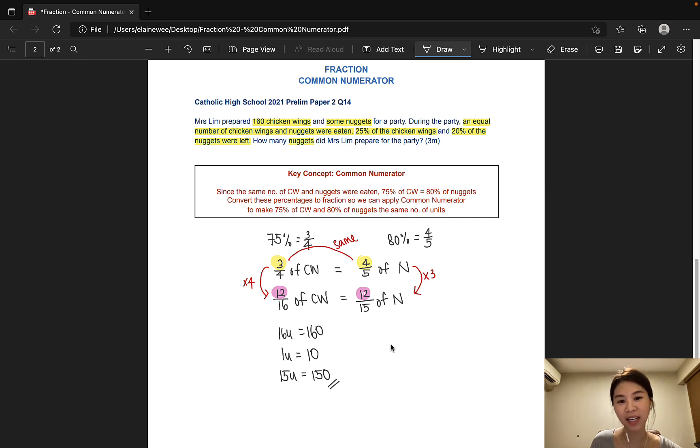So, as you can see, this method is so much faster compared to drawing a model, splitting every unit up into equal parts and then counting them one by one to find out what are the total units of chicken wings and total units of nuggets. One thing I'd also like to point out is that this method of common numerator is actually the fraction counterpart of constant part ratios. For constant part ratios, we are trying to make one part of the ratio the same, right? In this method, we are trying to make one part of the fraction the same.